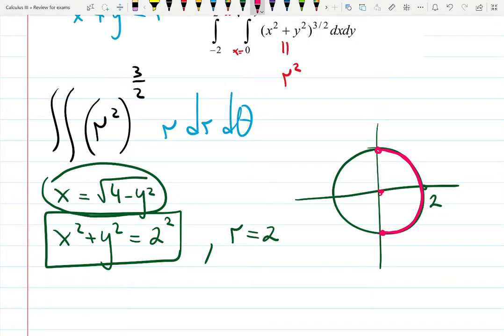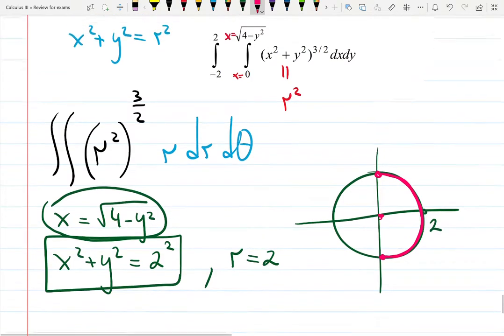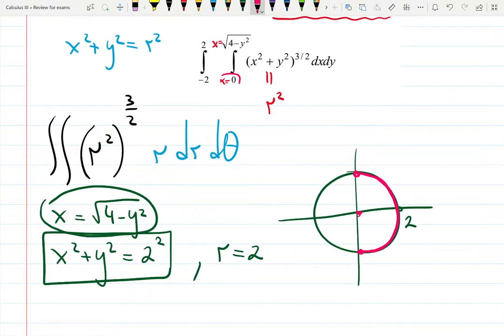But at least we know that r is from 0 to 2. Now from 0 to the positive square root, from here to here. So this is the right half of the circle.